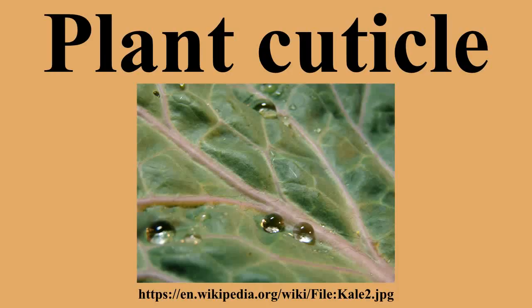A plant cuticle is a protecting film covering the epidermis of leaves, young shoots and other aerial plant organs without periderm. It consists of lipid and hydrocarbon polymers impregnated with wax, and is synthesized exclusively by the epidermal cells.